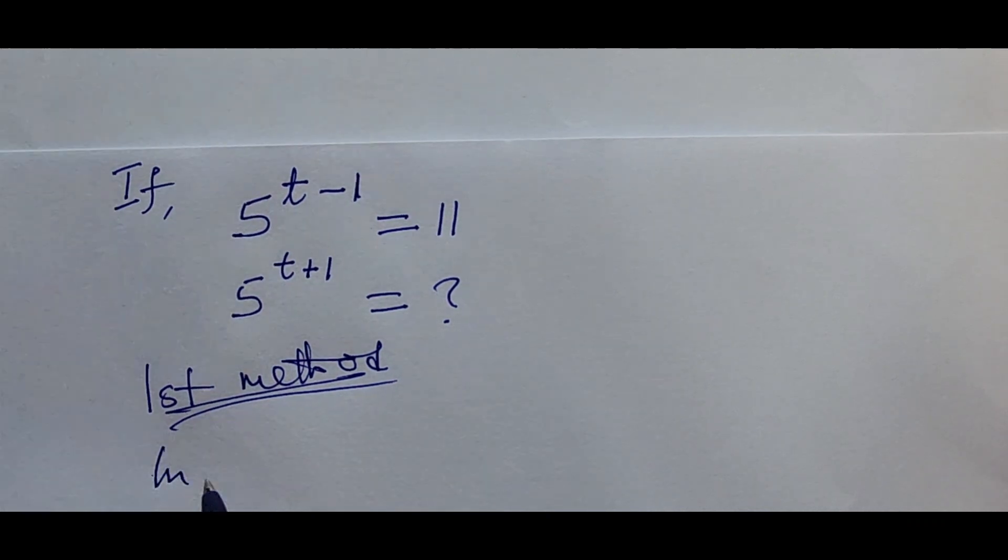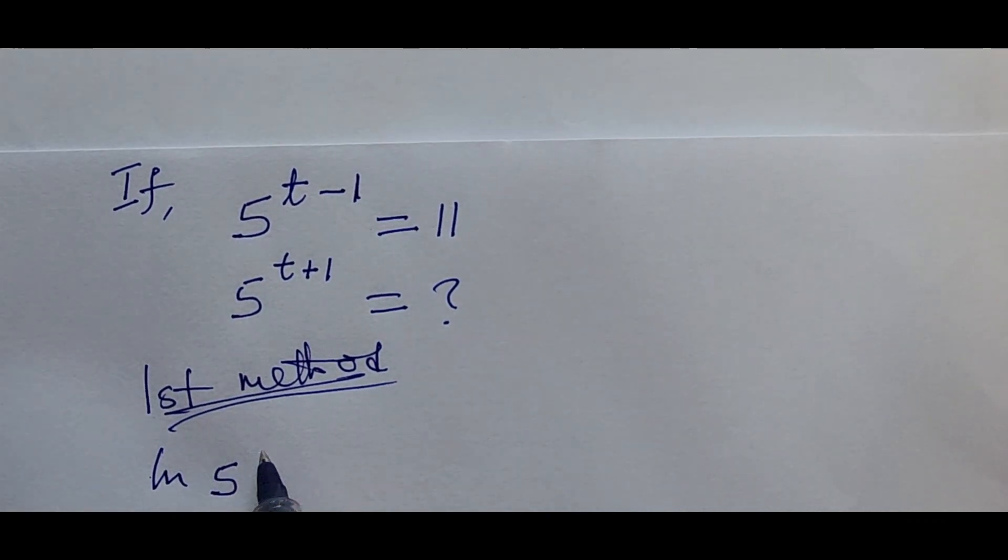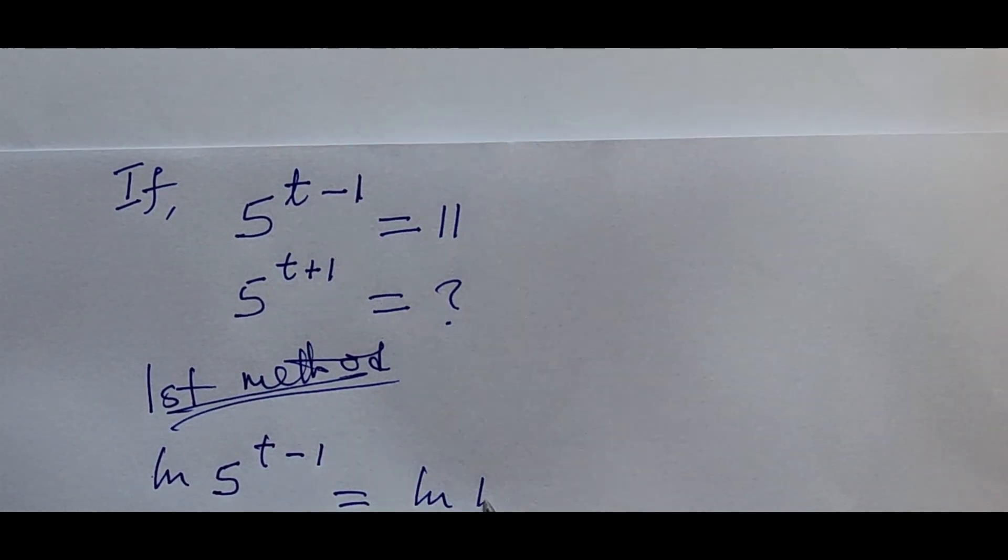So if we align both sides of the equation, this is going to give us the ln of our 5 to the power of t minus 1 equal to the ln of our 11.